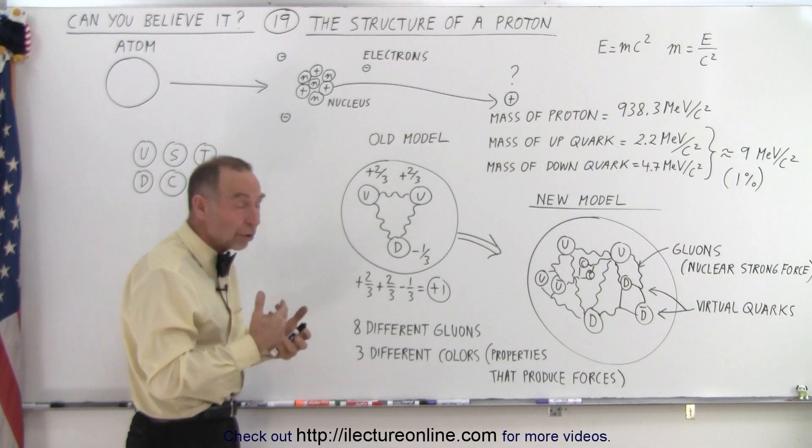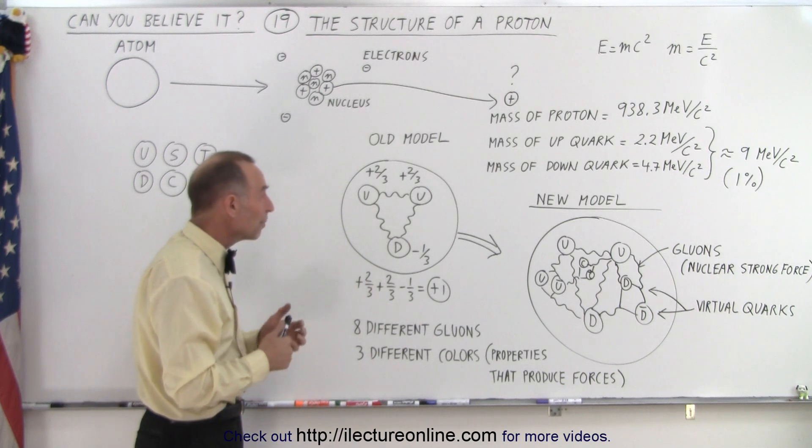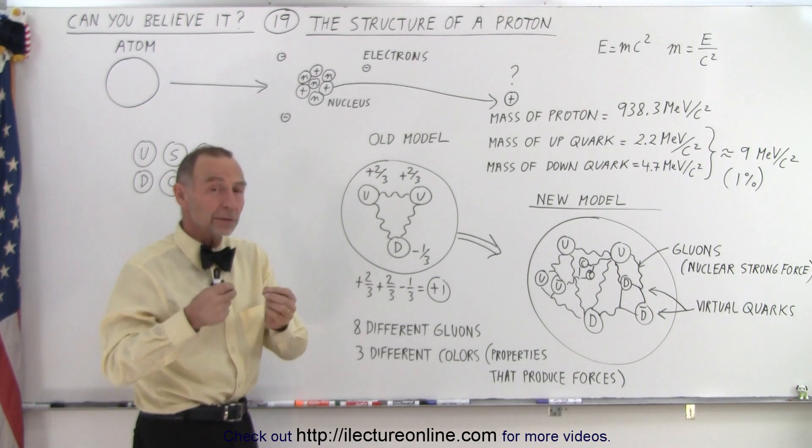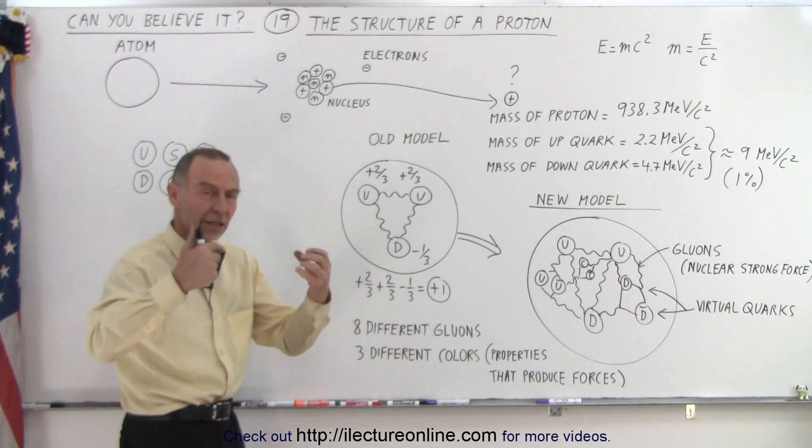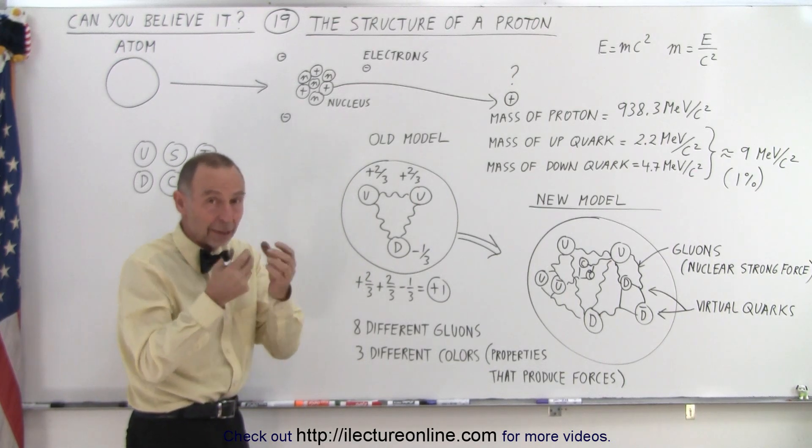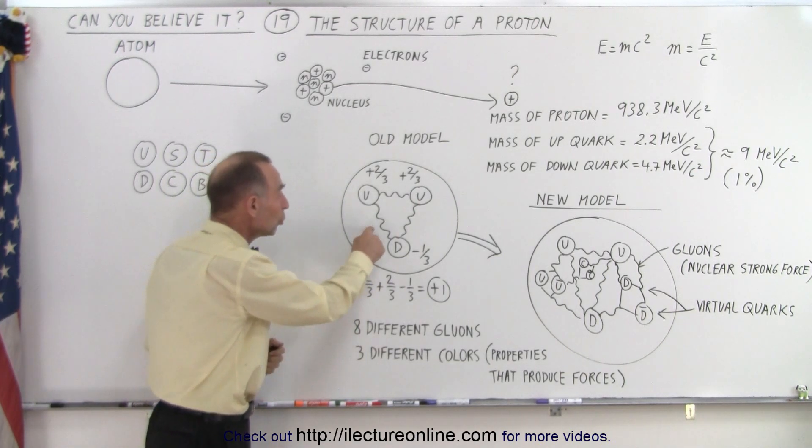And then when we continued to do experiments with even more powerful accelerators, we began to see an additional particle come out of the collision. And we figured that would be the thing we were looking for, which is called the gluons.